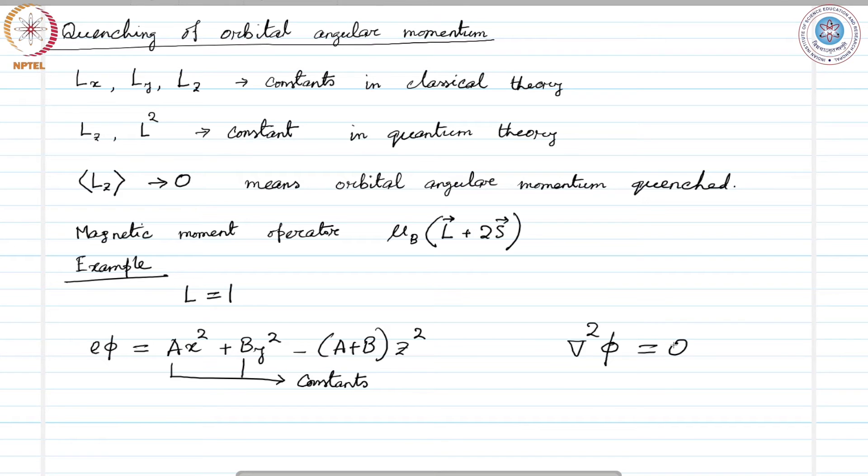In free space, the ground state is threefold degenerate with magnetic quantum numbers m_l equals 1, 0, and minus 1. This is valid in free space.